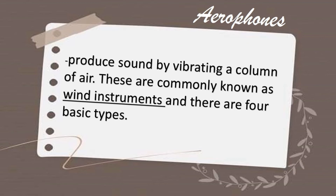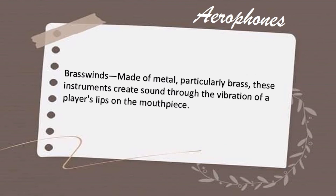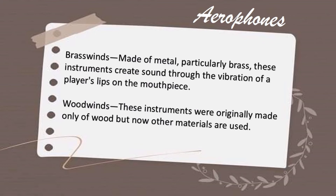The last classification is aerophones. Aerophones produce sounds by vibrating a column of air — they are commonly known as wind instruments. Aerophones need air in order to be played. This classification has four basic types. The first is brass winds, which are made of metal, particularly brass; these instruments create sound through the vibration of the player's lips on the mouthpiece.